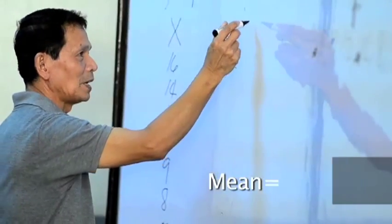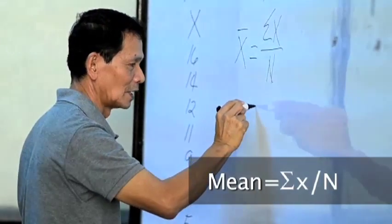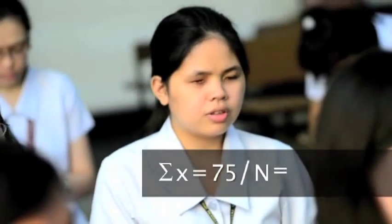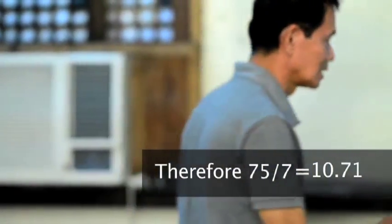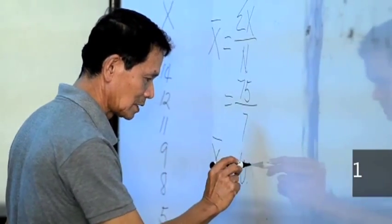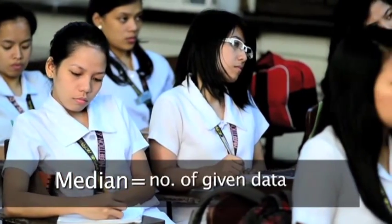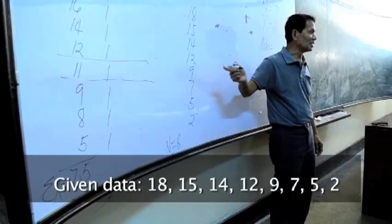Summation of x divided by n. Who can give me the given box? So the summation of x is 75. How many? 6, 37. All right, 10.7. Everybody, 10.71. All right, let me down with your score. You have to revise your frequency distribution. So it's now your frequency distribution. All right, number 10. What is the frequency count?